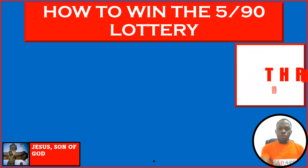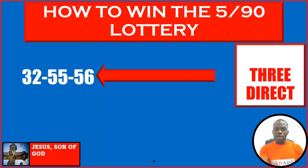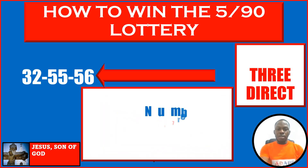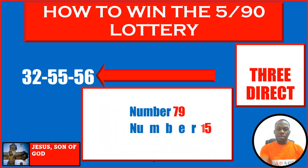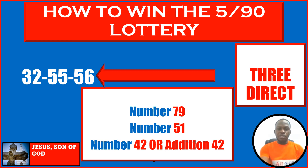We will be getting numbers as trade alerts: 32, 55 and 56. These are the possible trade alert set of numbers that we are researching about to find out the key which brought this set of numbers. We will be using number 79, number 51 and number 42 or addition 42 for this particular research activity.